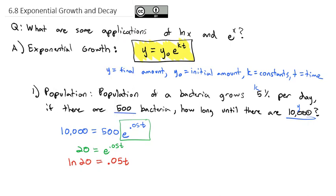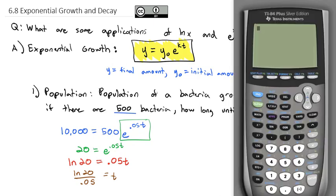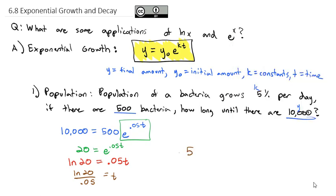To finish solving, we divide by 0.05, and get the natural log of 20 over 0.05. Our calculator tells us this equals about 59.91, so 59.91 days of 5% growth will move this bacteria from 500 to 10,000.